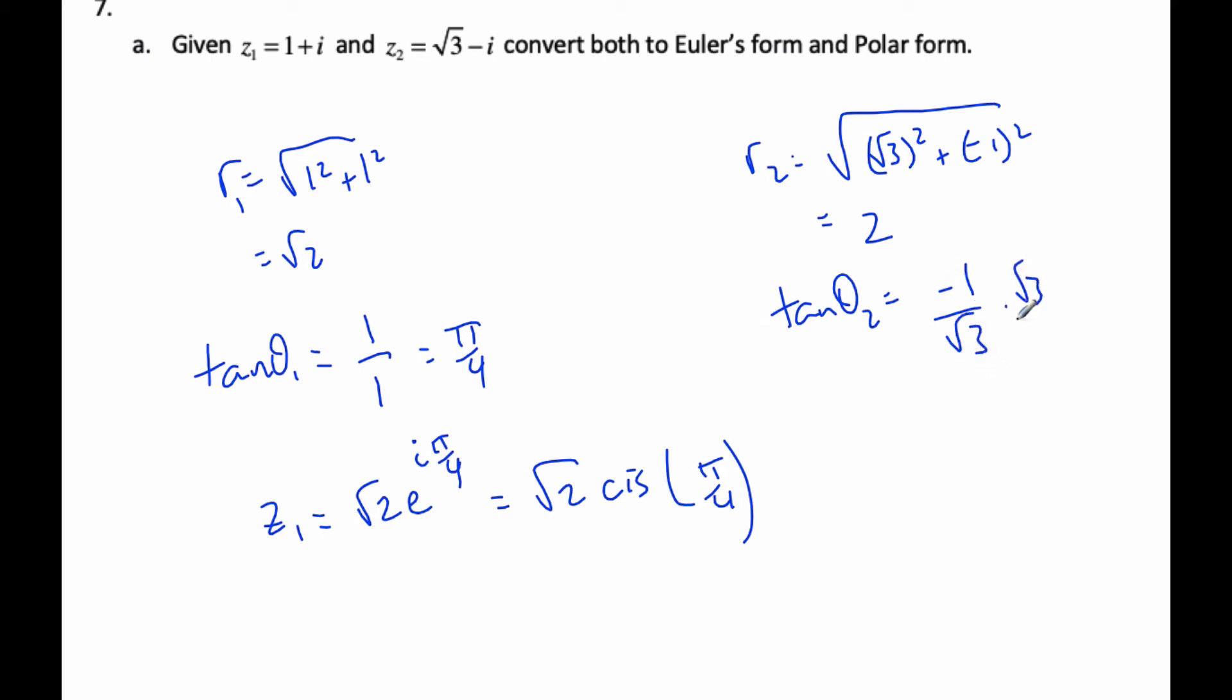If I rationalize this, I can see this is negative root 3 over 3, and I know that angle is going to be a pi by 6 reference angle.